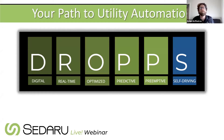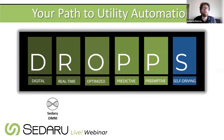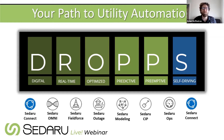On screen you can see our DROPS acronym, which represents the path to utility automation. Most utilities are somewhere on this progression on a timeline. Today we're going to show a little bit of Sedaru Omni, a little bit of Field Force, and some Outage. Most of these connections are done through our Sedaru Connect integration platform. Outage is one of those applications that really crosses a lot of the divide in terms of moving from digital towards self-driving, touching on almost every letter of DROPS.